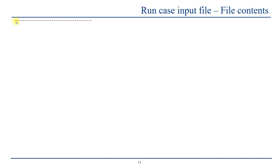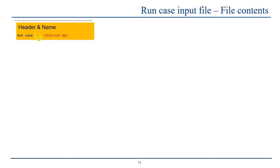When you start a run file, they usually start with a series of dashes to separate the different run cases. After this separator line you will get a header with the name. It starts with 'run space case double space a number.' Remember that if this number doesn't change and if you add multiple of these by copy-paste in a run file and all of them have run case one, you will only have one run case read in AVL. After the colon you have a name that can be anything — it is useful to identify what kind of conditions are to be used for your analysis.